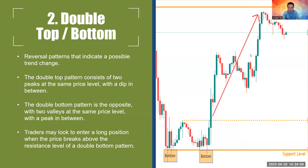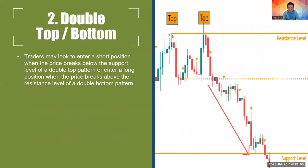For the double top, price comes up, tests resistance, comes back down, forms an interim support level, bounces back up, tests resistance again, and when it finally comes back down it indicates that market sentiment can't break above that resistance — signaling downside potential. Take profit levels would normally be at the support level, which is a reasonable target.